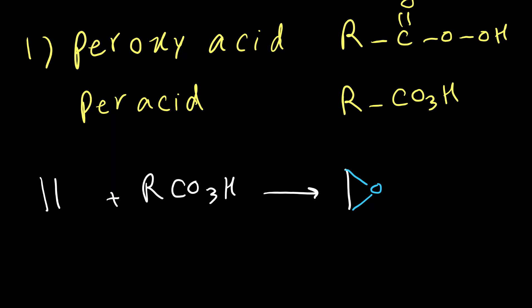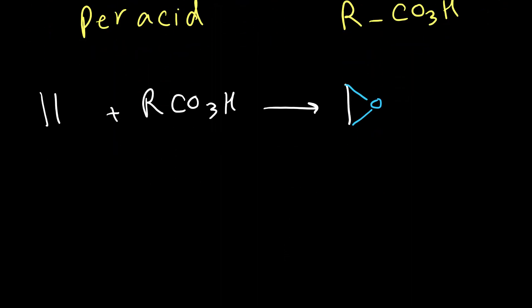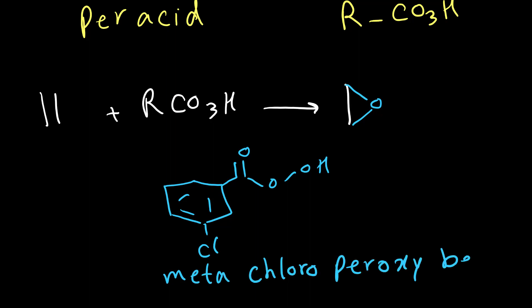Peroxy acids normally are not very stable and most of the time we can synthesize them during our reaction. There are a few that are industrially available. One of the most famous peroxy acids that we normally use in this reaction is methyl chloroperoxybenzoic acid.